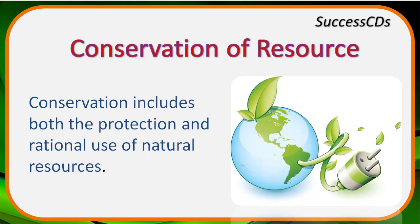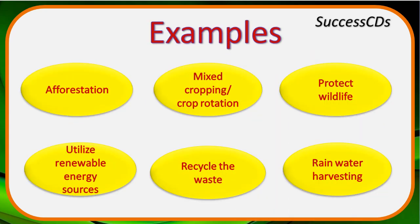Conservation of resources includes both the protection and rational use of natural resources so they don't get exhausted for future generations. Examples of conservation processes include: afforestation — planting more trees and events like Van Mahotsav Day to increase greenery; mixed cropping and crop rotation; protecting wildlife; utilizing renewable sources of energy like wind and solar energy while avoiding fossil fuels; recycling waste; and rainwater harvesting.